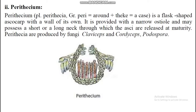Perithecium: a perithecium is flask-shaped with an ostiole. It is provided with a narrow ostiole and may have a short or long neck through which the asci are released at maturity. Examples include fungi such as Claviceps and Cordyceps.